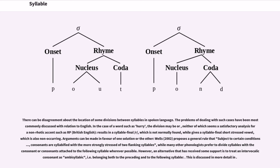There can be disagreement about the location of some divisions between syllables in spoken language. The problems of dealing with such cases have been most commonly discussed with relation to English. In the case of a word such as hurry, the division may be hu-rry or hur-ry, neither of which seems a satisfactory analysis for a non-rhotic accent such as RP. The first results in a syllable final r, which is not normally found, while the second gives a syllable final short stressed vowel, which is also non-occurring. Arguments can be made in favor of one solution or the other. Wells proposes a general rule that subject to certain conditions, consonants are syllabified with the more strongly stressed of two flanking syllables, while many other phonologists prefer to divide syllables with the consonant or consonants attached to the following syllable wherever possible. However, an alternative that has received some support is to treat an intervocalic consonant as ambisyllabic, i.e. belonging both to the preceding and to the following syllable.